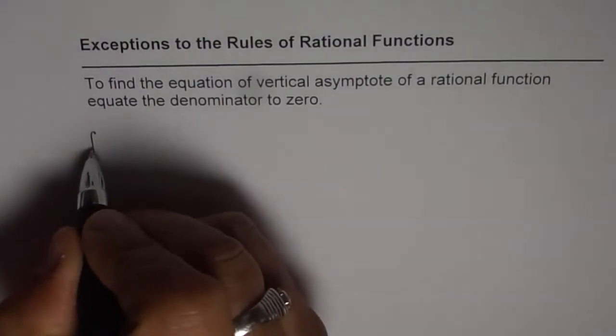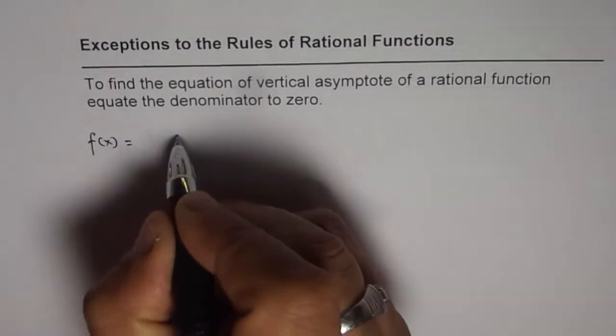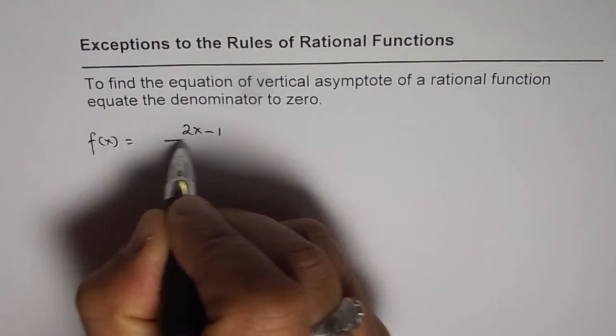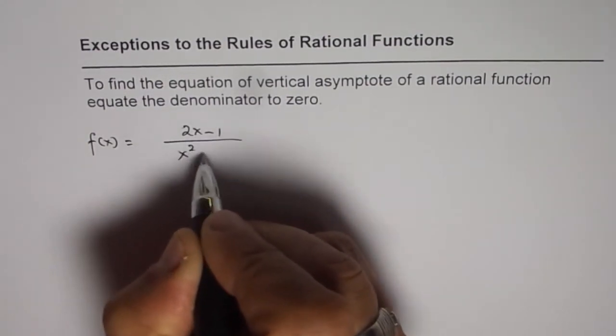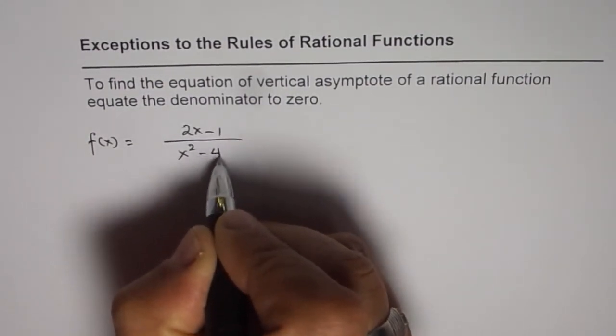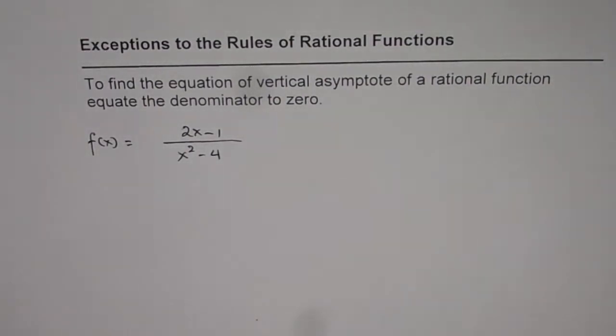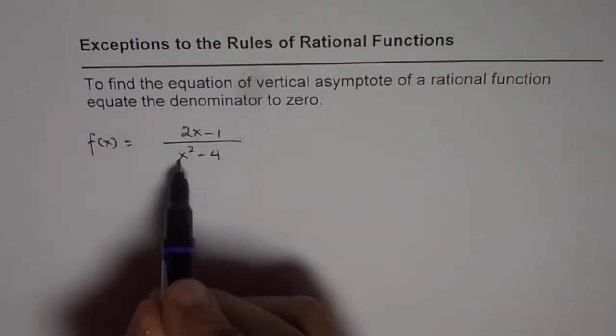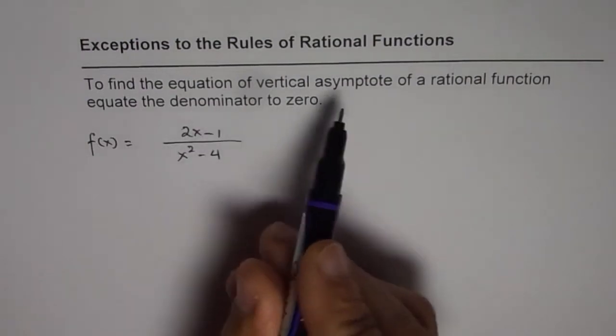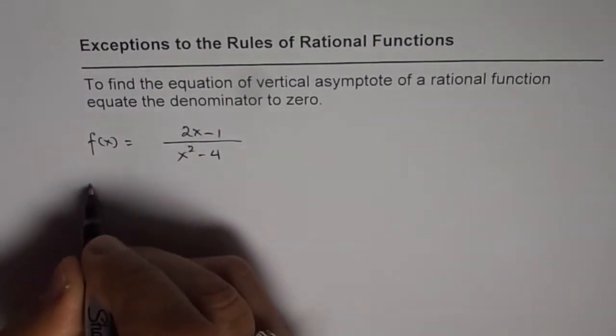Let me give you an example. So, f(x) equals, let us say, 2x minus 1 divided by x squared minus 4. So, in this particular case, we can equate denominator to 0 and find the equation of vertical asymptotes.